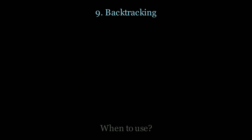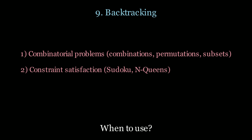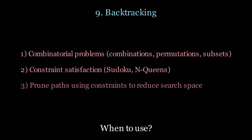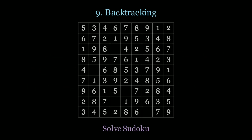Next up, backtracking. Use this for combinatorial problems such as combinations, permutations, and subsets; for constraint satisfaction such as solving Sudoku or N-queens; and when you need to prune paths using constraints to reduce the search space. For Sudoku, we try every possible number, backtrack when we fail, and continue until we find a solution.